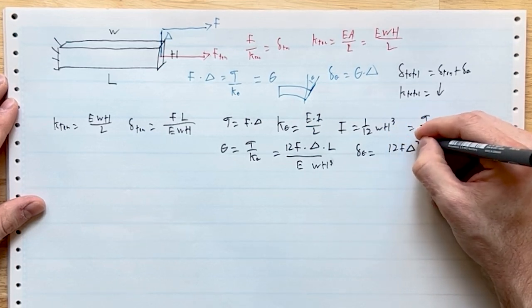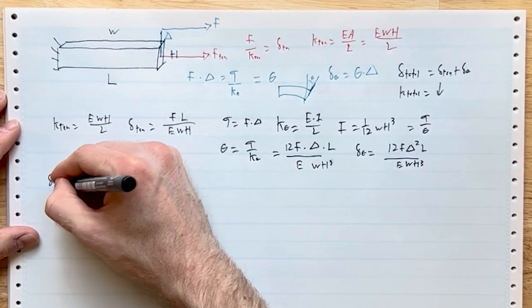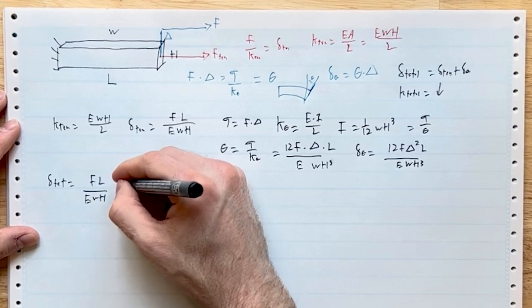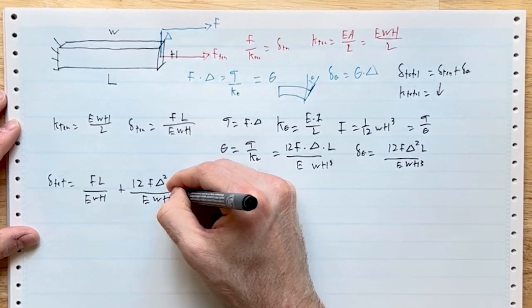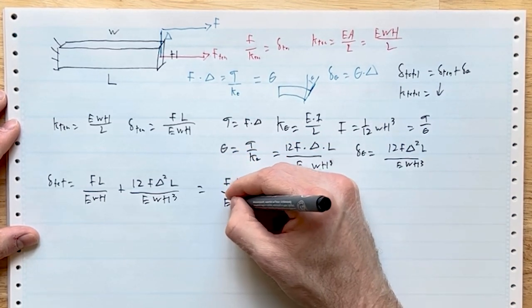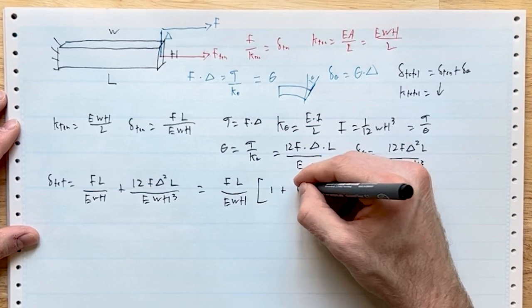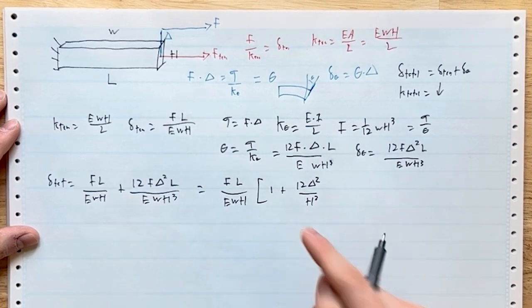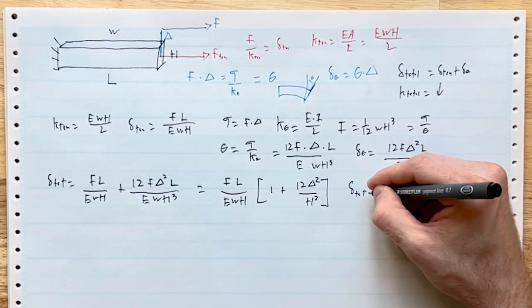Notice there's a lot more power showing up here. Delta_total equals, putting this all together, FL over EWH—see how it's all linear because the tension is linear, that makes us happy—plus 12F delta squared L over EWH cubed. We notice some terms we can combine, so pull out FL over EWH. You'll notice that is very similar to the tension stiffness, which it is, times 1 plus 12 delta squared over h squared. We just took out the WH from the WH cubed and we're left with h squared.